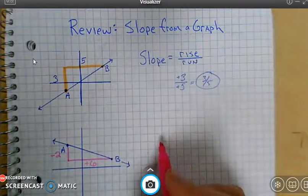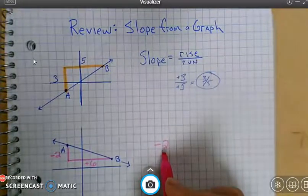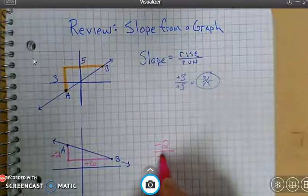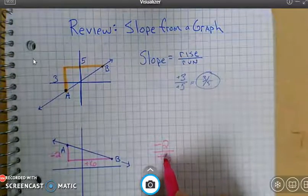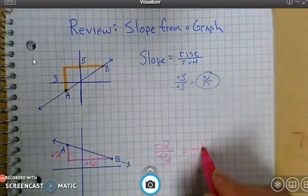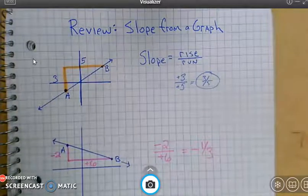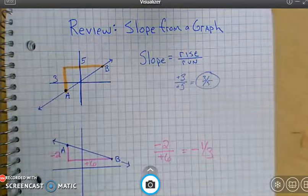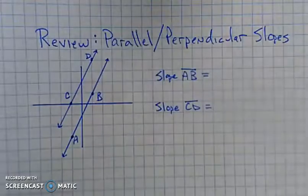So the ratio here is going to be the rise is negative 2, of course it fell down, and then went over 6. Well, I know a negative over a positive is negative, and 2 divided by 6 is 1 third.